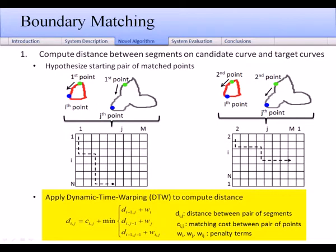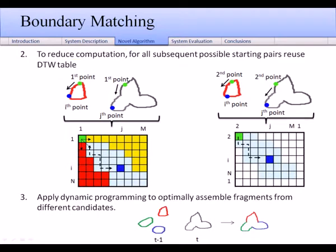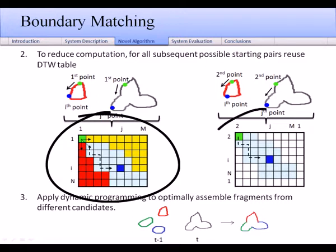Using dynamic time warping, the distance between all possible pairings of fragments from both curves are computed. A naive implementation requires the creation of a quadratic number of tables to evaluate all possible starting point pairs. A key observation we utilize to reduce computation is that shortest paths already computed for one table can be reused for another table.